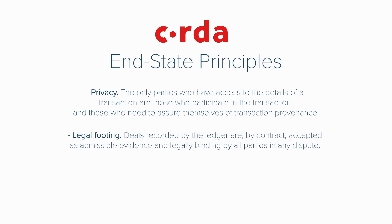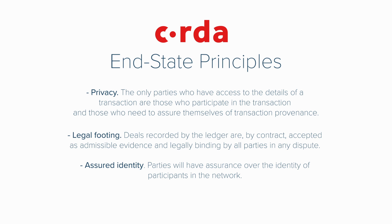Legal footing: deals recorded by the ledger are, by contract, accepted as admissible evidence and legally binding by all parties in any dispute. Corda provides assured identity. Parties will have assurance over the identity of participants in the network — obviously a very important feature for a global ledger where you don't know other participants. This is made possible due to KYC requirements of all participants of the network and the core identity framework, which enables Corda to assign a single user profile to any legal entity, whether it be an organization or an individual. It's an enterprise blockchain looking to also provide a solution for individuals.